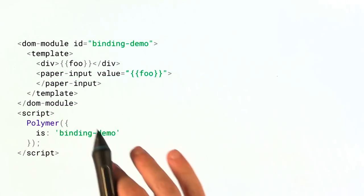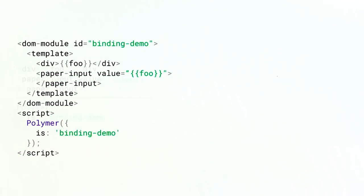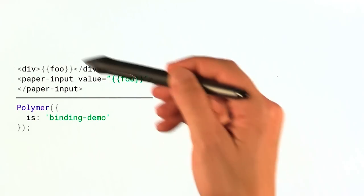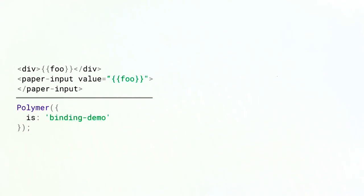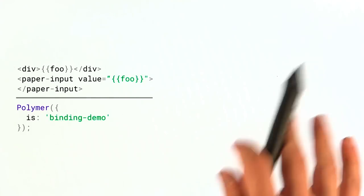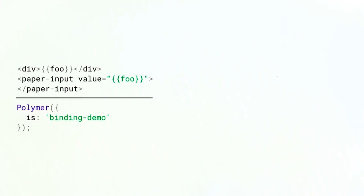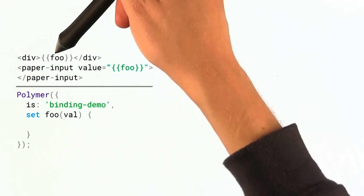Now, looking back at our example, I'm going to simplify things just a little bit so there's less markup to look at. OK. So this is our template, and this is our Polymer element definition. Now, the other thing that Polymer is going to do, aside from creating property effects, is it's going to create a setter for this property that we've got here, this foo property.